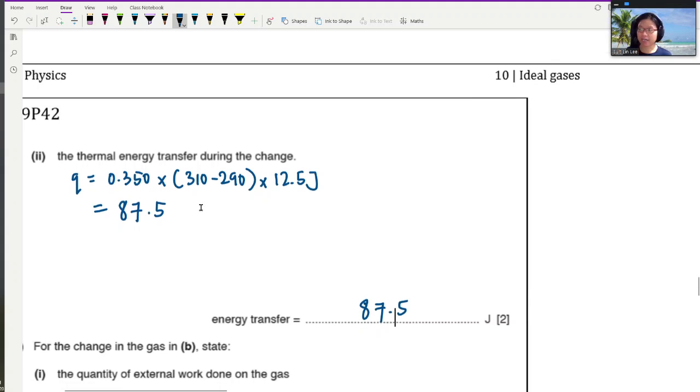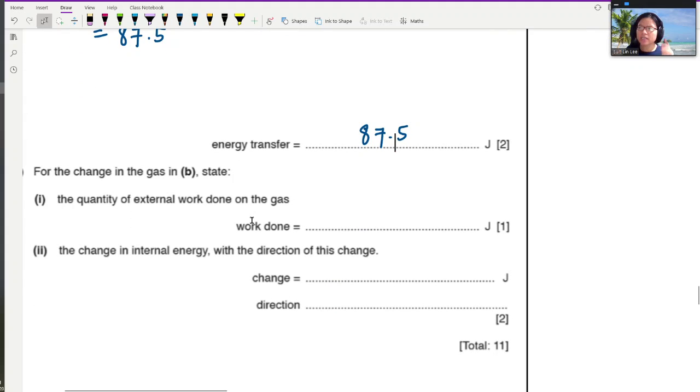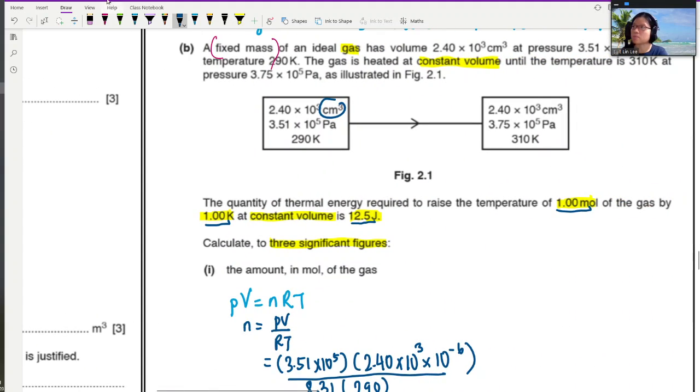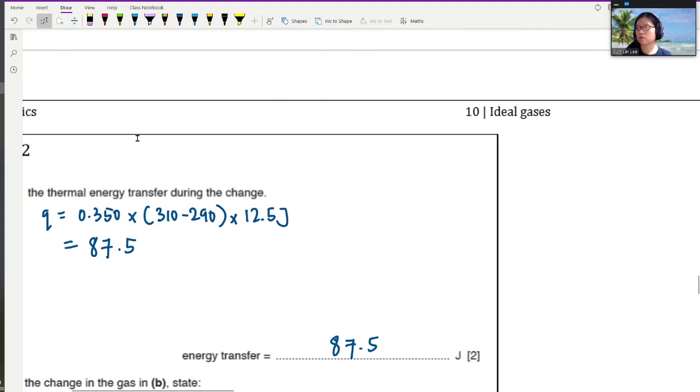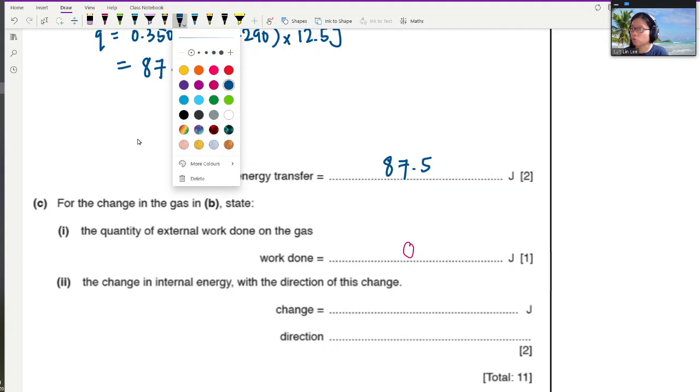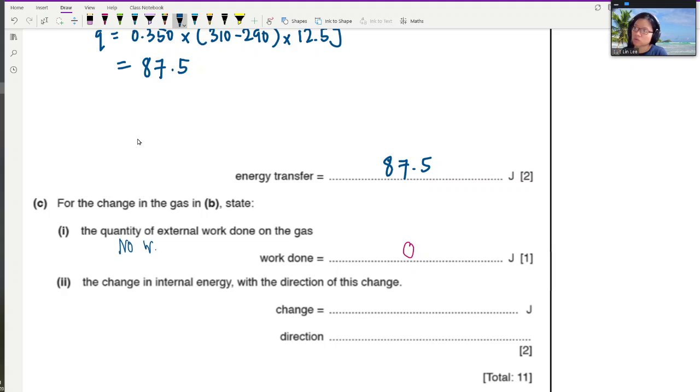For the change in gas in B, state the quantity of external work done. So if we go back to the question, we will notice you have this important phrase called constant volume. So if we recall, constant volume here means that there is no work done on the gas or by the gas. So recall what you learned before. There's no work done on or by the gas, which means, just put 0. And if you want a reason, we can say that there is no work done because the change in volume is 0.